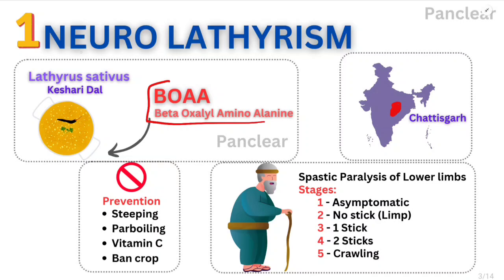It causes neurolathyrism. As the name says, lathyrus sativus causes neuronal symptoms affecting the Central Nervous System. Ortho-lathyrism is the same concept, but ortho-lathyrism is mostly seen in animals, not in humans. That is neurolathyrism. It causes UMN — Upper Motor Neuron — type of lesion.